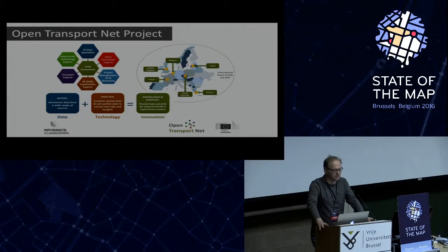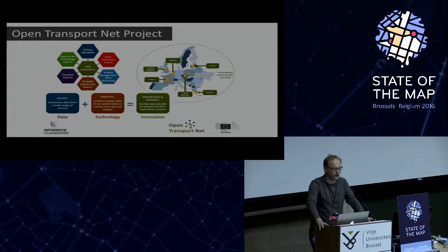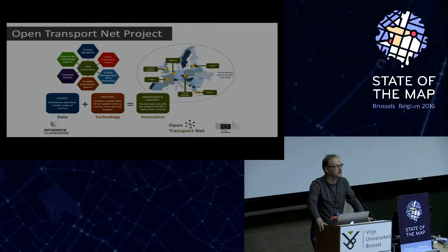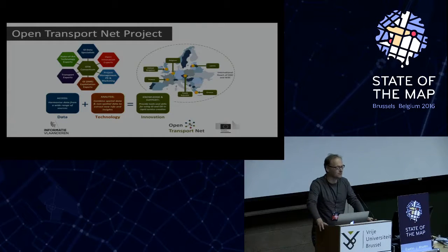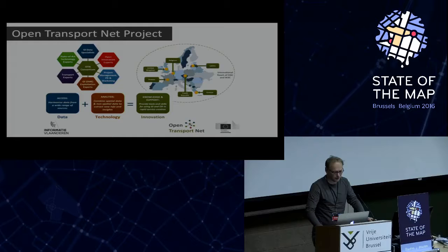Our consortium exists from 15 partners all around Europe, and we have four pilot cities we are especially working with: the city of Antwerp here in Belgium, Birmingham, the Liberec region in Czech Republic, and the Paris region. We are trying to combine all this information and make it available.